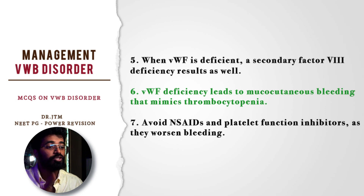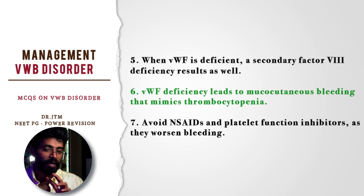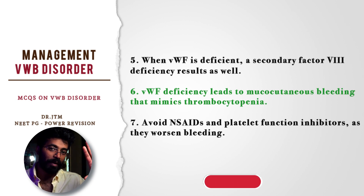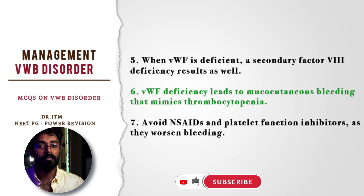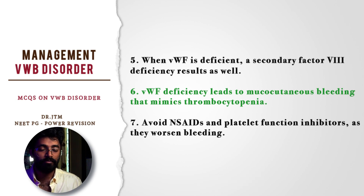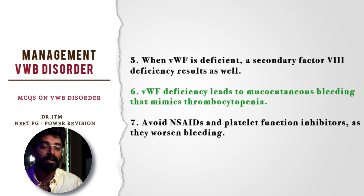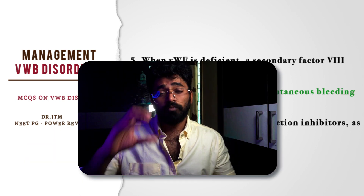Features of factor VIII deficiency will also be present in cases of von Willebrand disease. Deficiency of von Willebrand factor leads to mucocutaneous bleeding that mimics thrombocytopenia. The patient should be evaluated for platelet function: if platelet levels are normal but platelet function is reduced, it is von Willebrand disease; if platelet function is normal but platelets are low, it is thrombocytopenia. Avoid NSAIDs and platelet function inhibitors as they worsen the bleeding — aspirin, for example, acts as an antiplatelet and should be avoided in these patients.